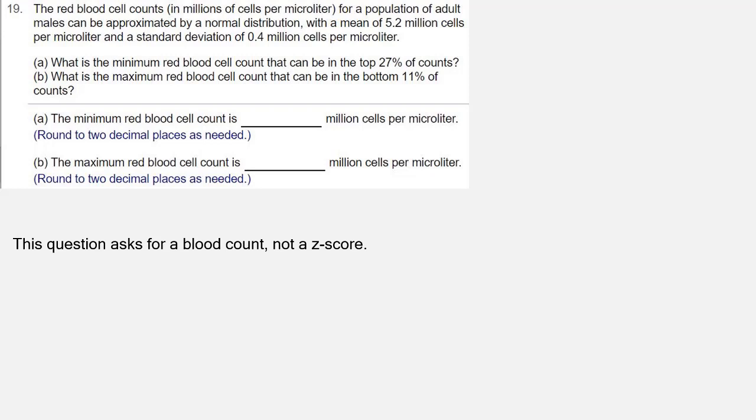The question asks for a blood count, not a z-score. We're going to turn to the x-value formula: x equals μ plus z times σ. So using the values from the problem, we have 5.2 plus 0.61 times 0.4,